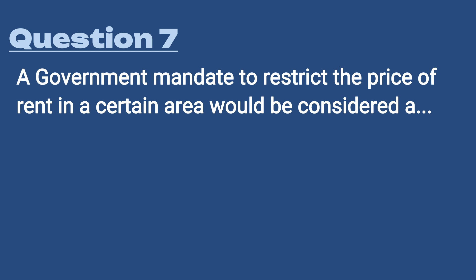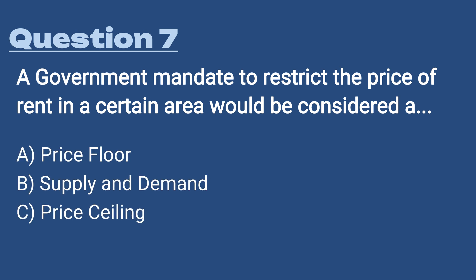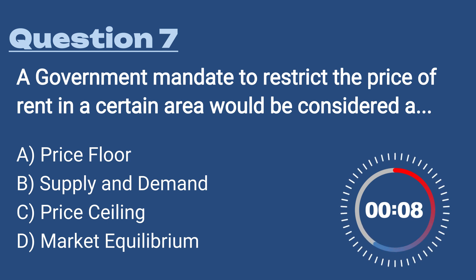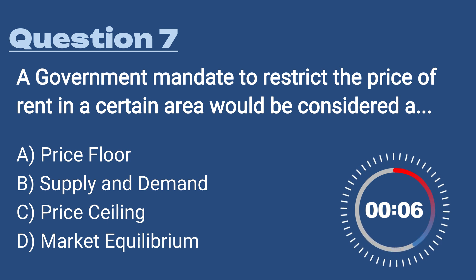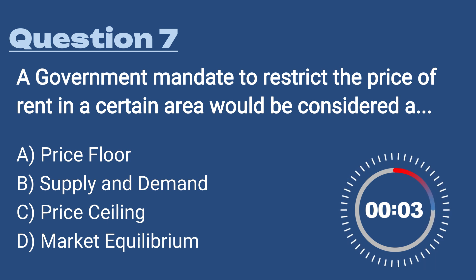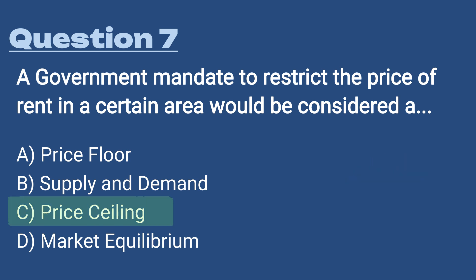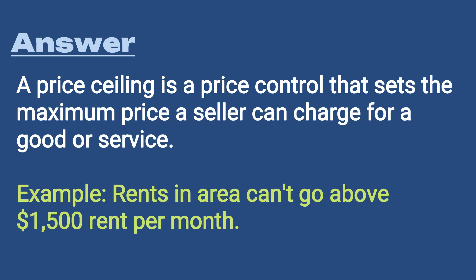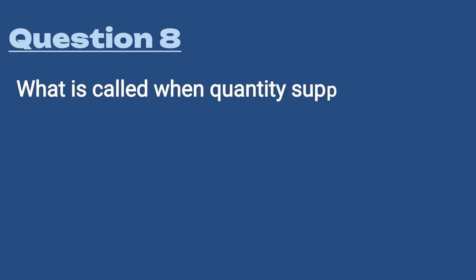Question number seven: a government mandate to restrict the price of rent in a certain area would be considered A) a price floor, B) supply and demand, C) a price ceiling, or D) market equilibrium. The answer is C, price ceiling — a price control that sets the maximum price a seller can charge for a good or service, usually through legislation or a government agency. This is the opposite of a price floor.